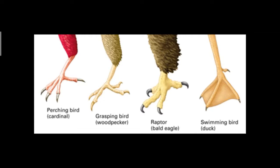For an eagle, the claws are sharp so they can hold their prey. And lastly, the webbed claws of a swimming bird.